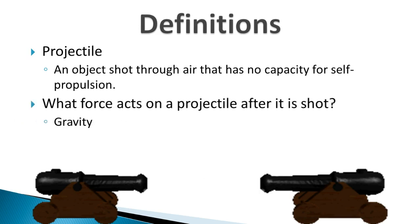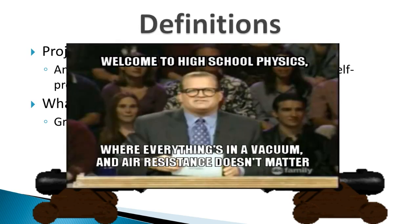After a projectile is shot, it's important to know that the only thing affecting it is gravity. Because nothing's pushing it forward anymore, gravity is the only thing pulling down on it — the only thing, other than the possibility of air resistance, affecting the projectile at all. We usually end up ignoring air resistance, pretending that most problems are in a vacuum.